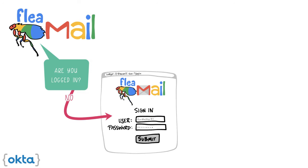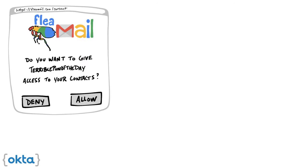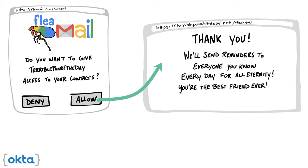Your email service then checks to see if you are currently logged in. If not, you get a prompt to log in. After you log in, or if you already have an active login session, you'll be presented with a question similar to: do you want to give Terrible Pun of the Day access to your contacts? Assuming you haven't changed your mind, you click Allow. You are redirected back to Terrible Pun of the Day, and the application can now read your contacts — and that's the only thing it can do. Terrible Pun of the Day can now send emails to everyone you know. OAuth for the win.